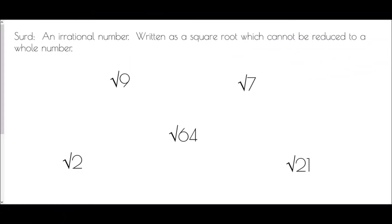So just to start, a quick definition of what a surd actually is. It's an irrational number — something where if you wrote it out as a decimal it would go on forever and ever. It's written as a square root which cannot be reduced to a whole number. I want to start by having a quick look at some values and decide which of these are surds and which are not.